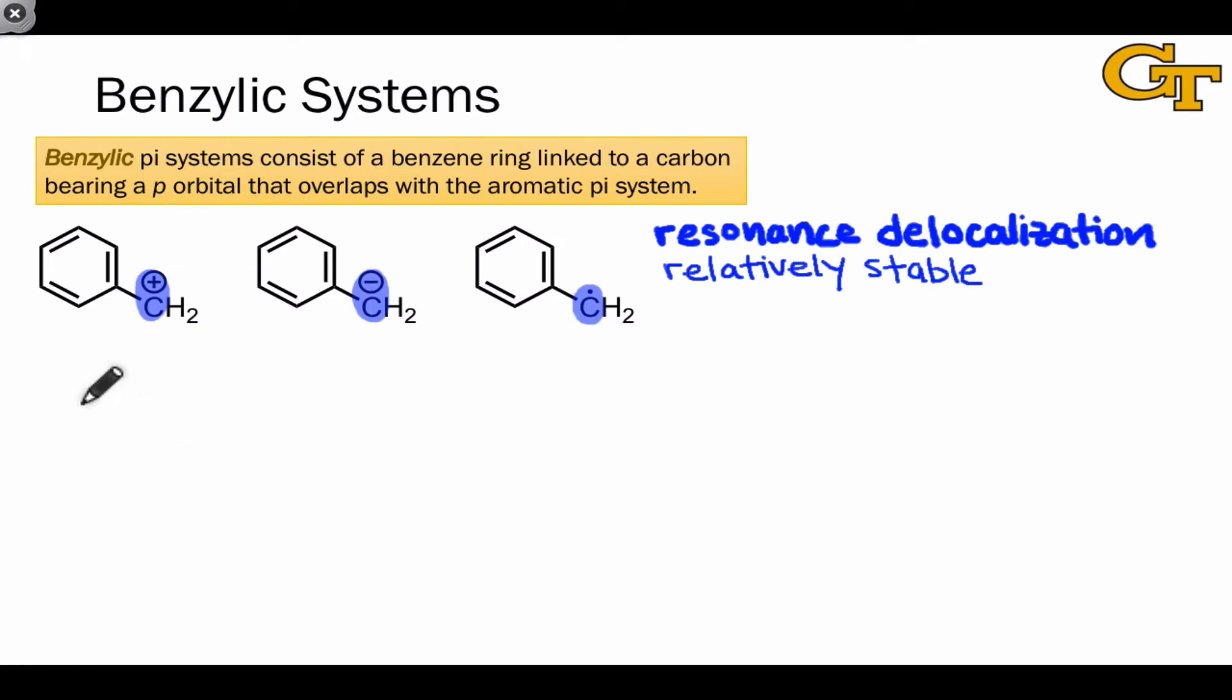Let's consider a few examples of this. One important example concerns benzylic halides and pseudohalides in nucleophilic substitution reactions. Looking, for example, at this molecule, benzyl bromide, naively we might expect that this can only do SN2 because of the primary nature of the electrophilic carbon.